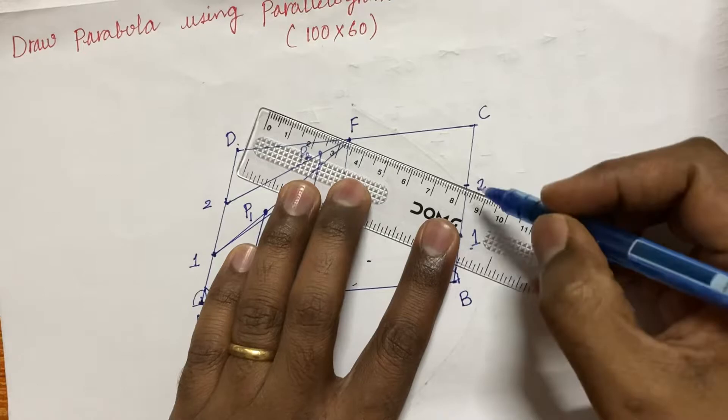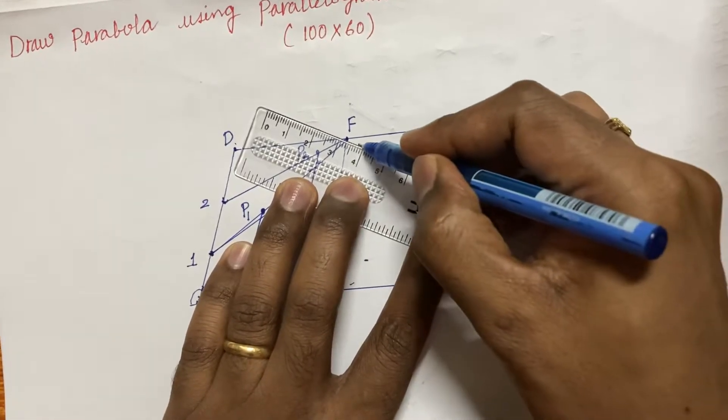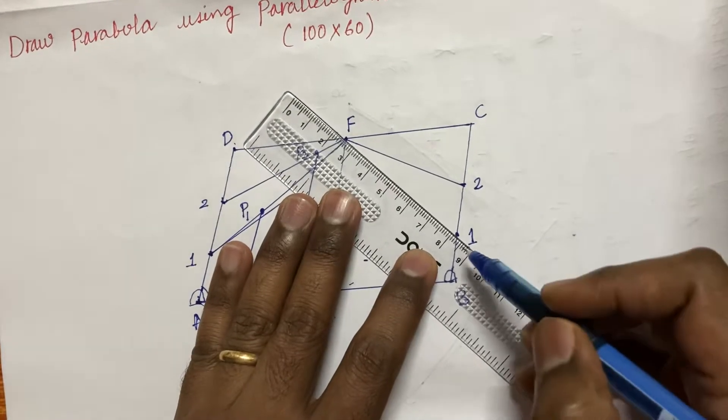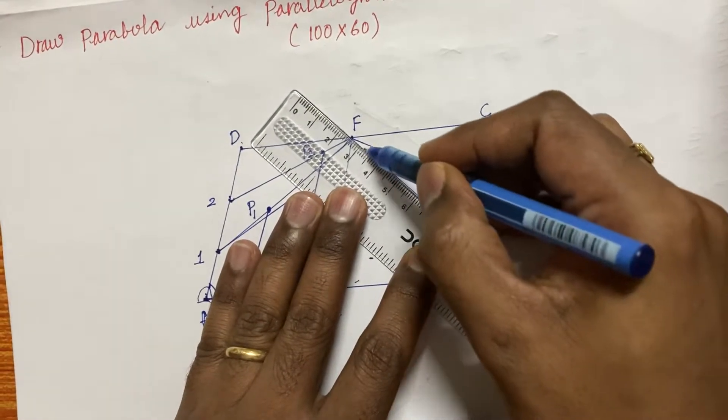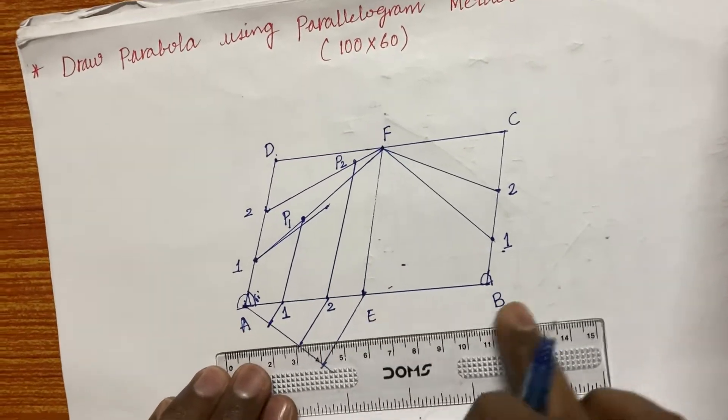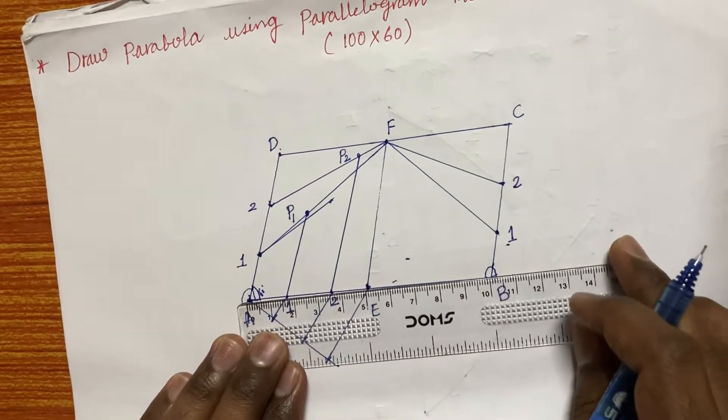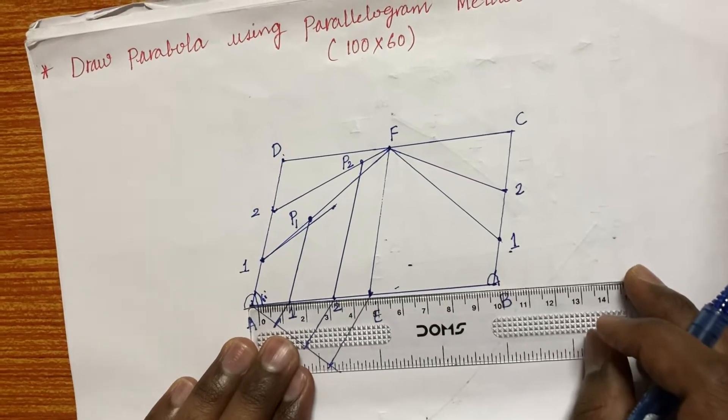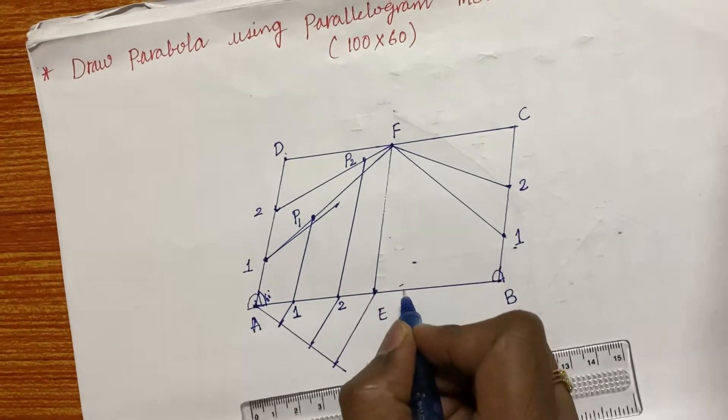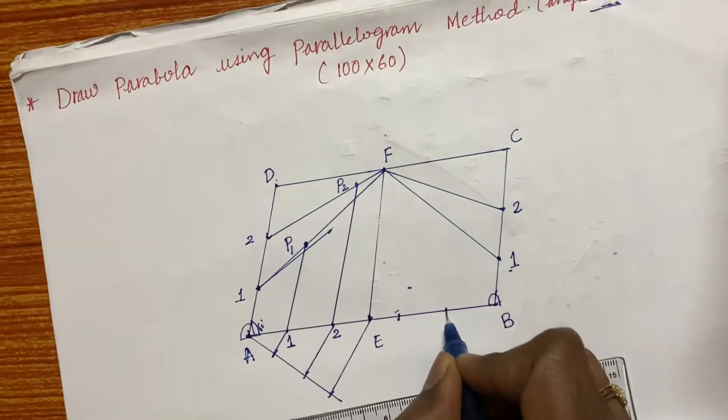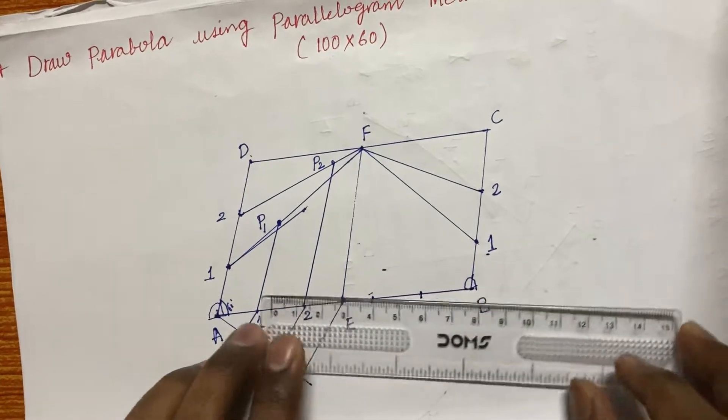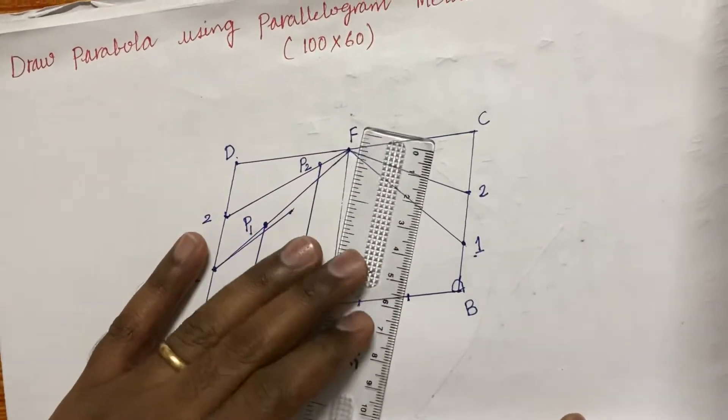Later, what you are supposed to do even here also this side, the BC line to be divided into equal number of divisions and join those points to F. Join those points to F from this. Later, I told that we are supposed to divide even AEB also into equal number of divisions. So you can follow division of a line method or take your compass and measure the distance and mark on this 1 as well as 2 and 3. Measure with this or take the scale and measure this distance and work out instead of going with division of a line concept.